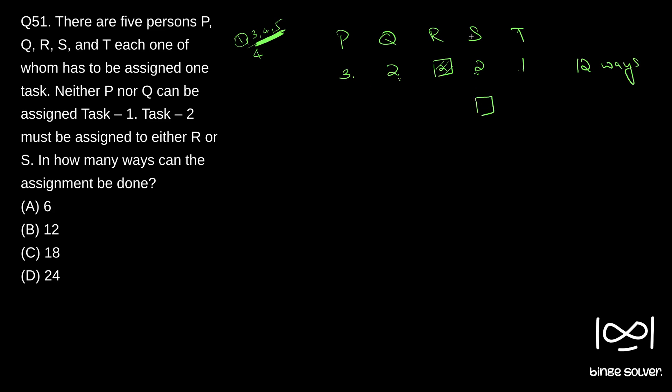Now let's assume task 2 is assigned to S. Same situation, so P can again be filled with three tasks, Q with two tasks, R can be filled with two tasks, and T will be one task. So 3 into 2 is 6, 6 into 2 is 12, so 12 ways.